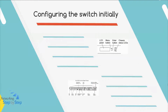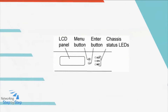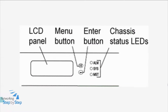Configuring the switch initially: after the switch powers up, press the Menu button next to the LCD panel on the front of the box and navigate to the Maintenance menu. Press Enter and then press the Menu button again until you see Enter Easy Setup.